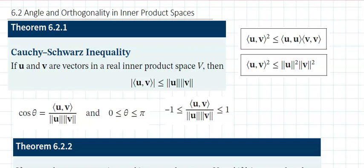Section 6.2 talks about angle and orthogonality in inner product spaces. We'll focus on the real inner product space — we covered complex inner product in sections 5.1 through 5.4. The Cauchy-Schwarz inequality states that the absolute value of the inner product of u and v is less than or equal to the magnitude of u times the magnitude of v.